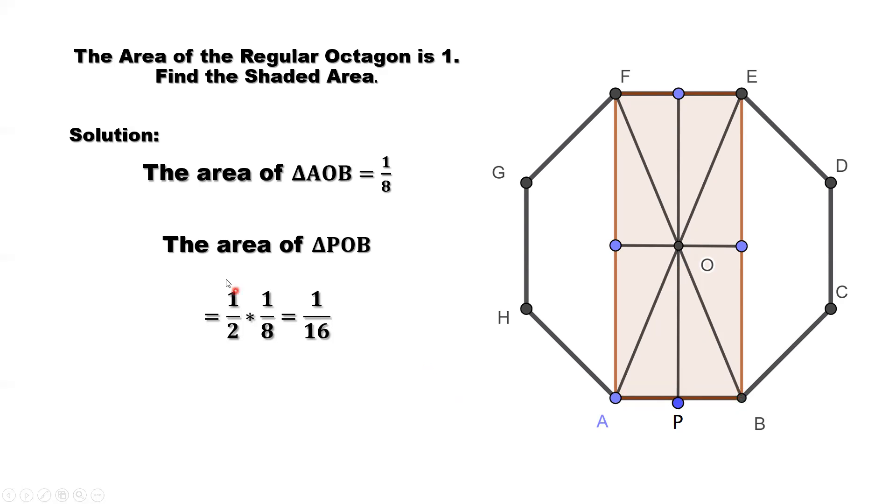Therefore, the area of triangle POB equals one over sixteen. Our question is to find the area of this rectangle.